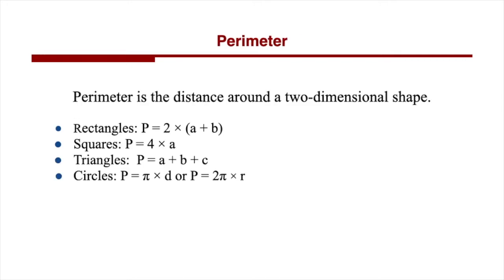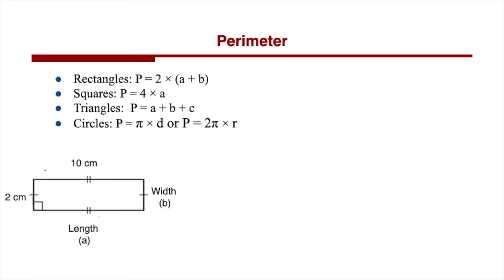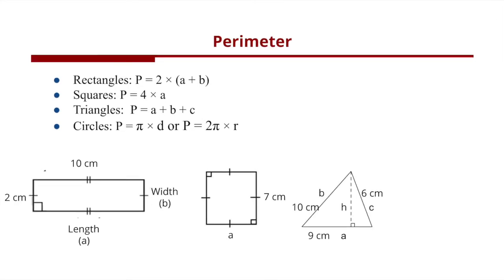Perimeter is the distance around a two-dimensional shape. The perimeter formula of a rectangle is the sum of the length plus the width multiplied by 2. The perimeter formula of a square is 4 times the side length. The perimeter formula of a triangle is all sides added together, or a plus b plus c.